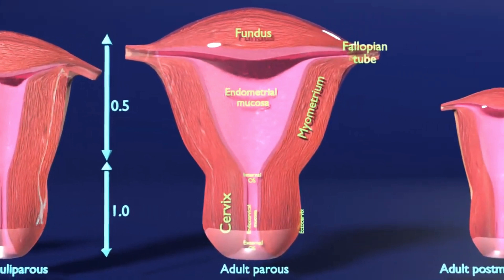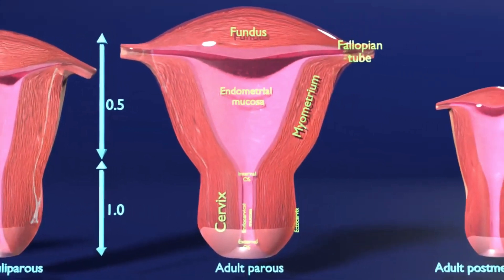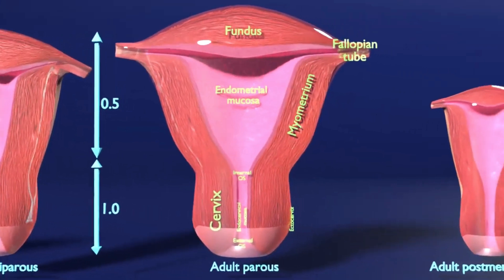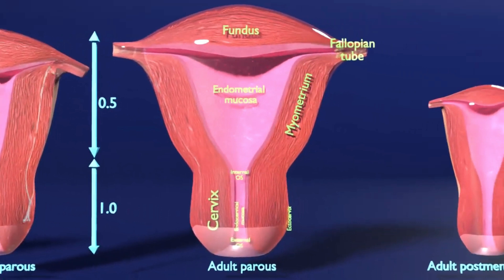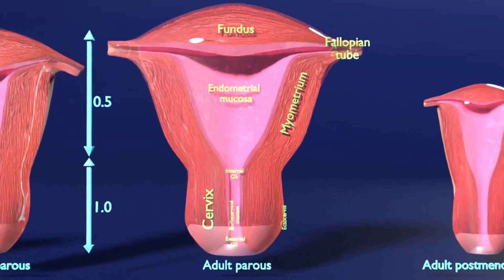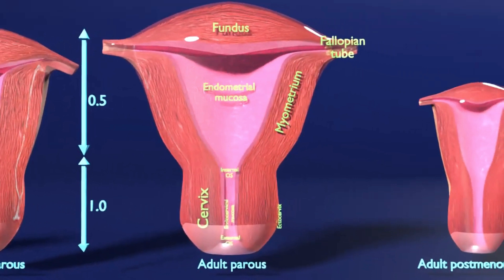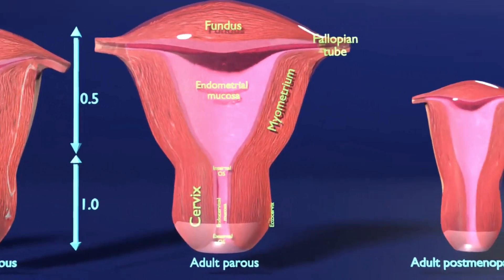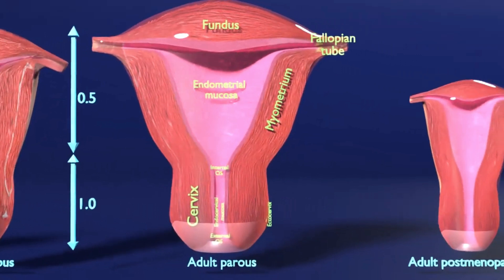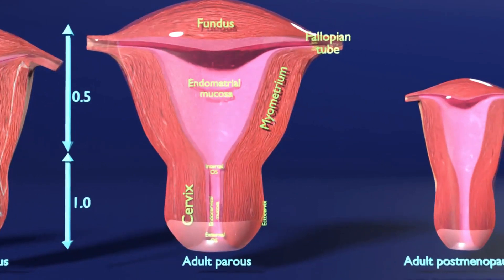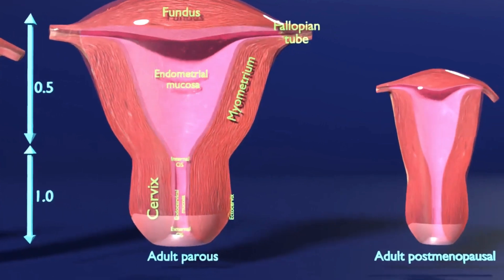The endometrium is the inner epithelial layer, along with its mucous membrane, of the uterus. It has a basal layer and a functional layer; the functional layer thickens and is then shed during menstruation. The myometrium is located between the endometrium, the inner layer of the uterine wall, and the serosa or perimetrium, the outer uterine layer. It is the thickest tissue of the uterus, composed of smooth muscle fibers. The lower part of the cervix, also known as the vaginal portion or ectocervix, bulges into the top of the vagina.